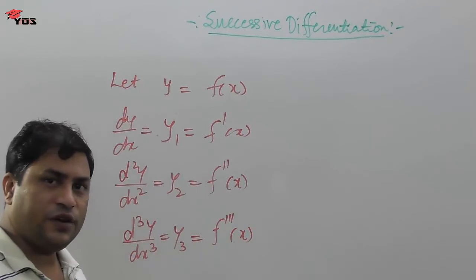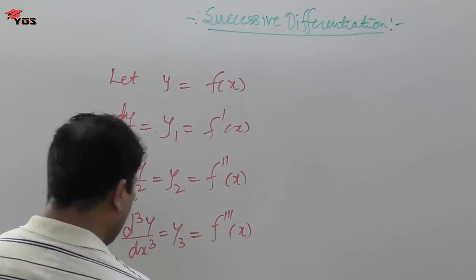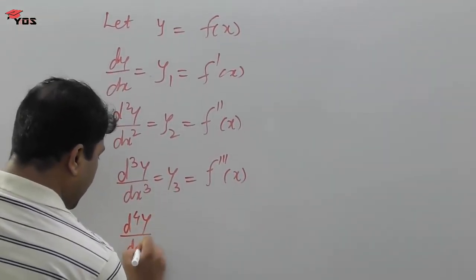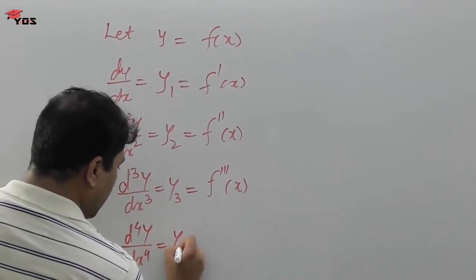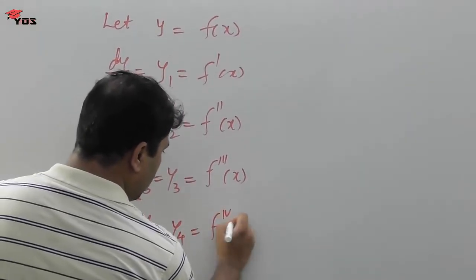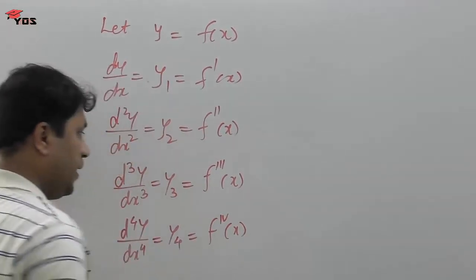Now, if I differentiate this third derivative, we get d⁴y by dx⁴ equals y₄ equals the fourth derivative of x.